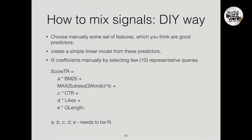How to mix signals the do-it-yourself way. We can try to do it cheaper and more indie. We can choose manually some set of features we think are good predictors, then create a simple linear model. The coefficients need to be fit — take 10 representative queries, spend one hour, and fit them manually. This is better than nothing. Of course it's a dumb approach, but it works somehow.